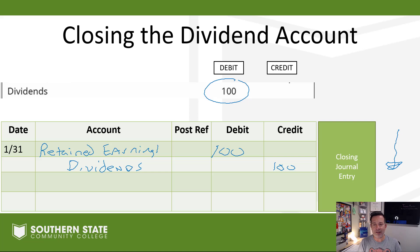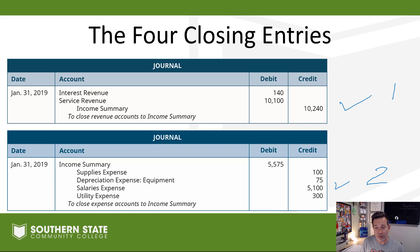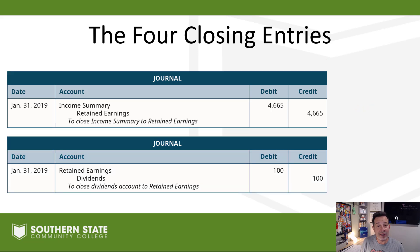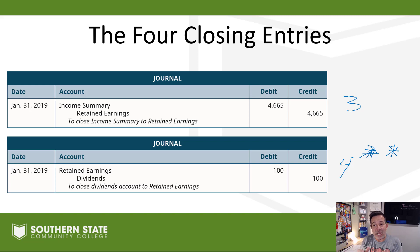So we have four closing entries. Entry one: close out the revenue accounts. Entry two: close out the expense accounts. Entry three: close out the income summary account. Entry four: close out dividends — with an asterisk, because we may not always have dividends. If dividends weren't declared, there will be nothing there to close out.